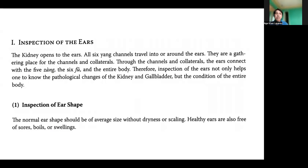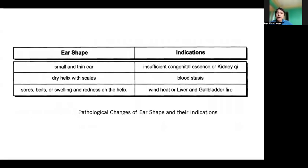Number one: inspection of the ear shape. The normal ear shape should be of average size without dryness or scaling. Healthy ears are also free of sores, boils, or swelling. Pathological ear shapes and their indications: a small and thin ear indicates insufficient congenital essence or kidney Jing. A dry helix with scales indicates blood stasis. Sores, boils, swelling, or redness on the helix indicate wind heat or liver and gallbladder fire.